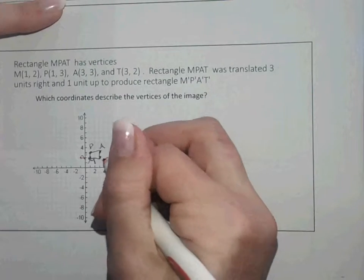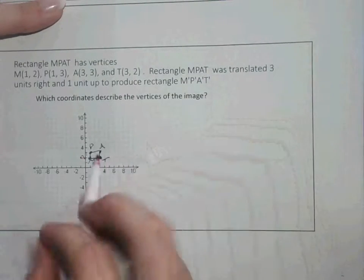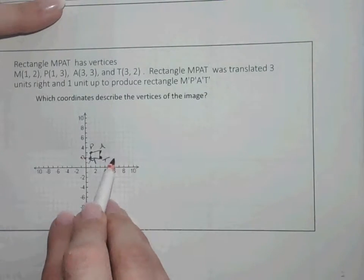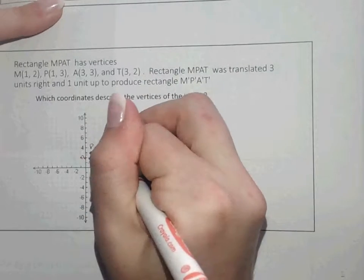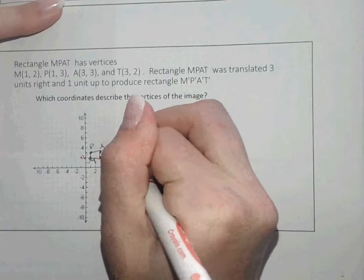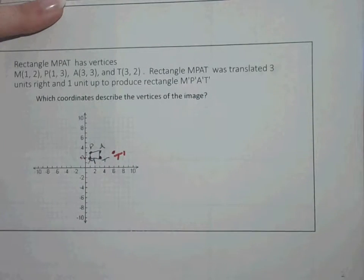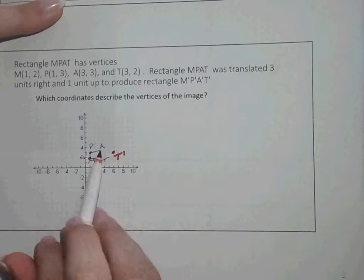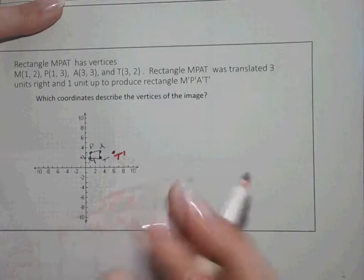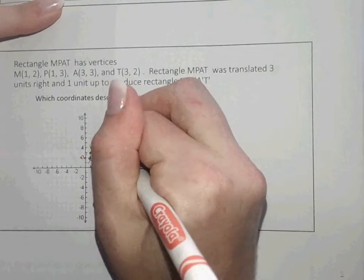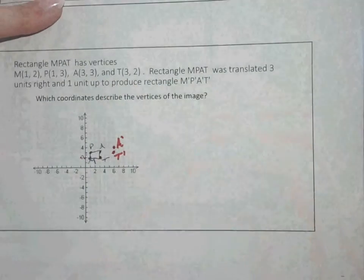So I'm going to take T right here, and I'm going to move it one, two, three units to the right, and up one. That's going to be my new T-prime. So I'm going to go to A, and I'm going to move it one, two, three units to the right, and one up, and that gives me my new A-prime.